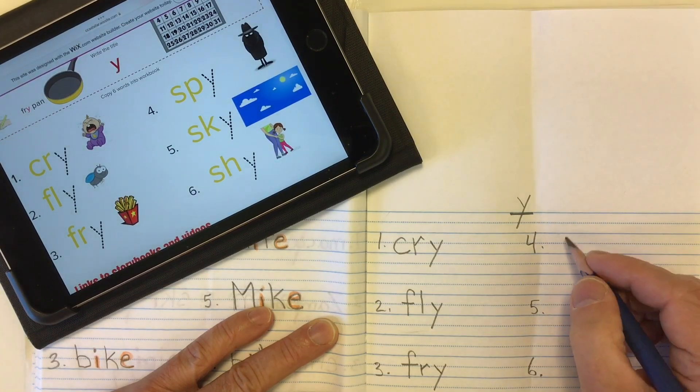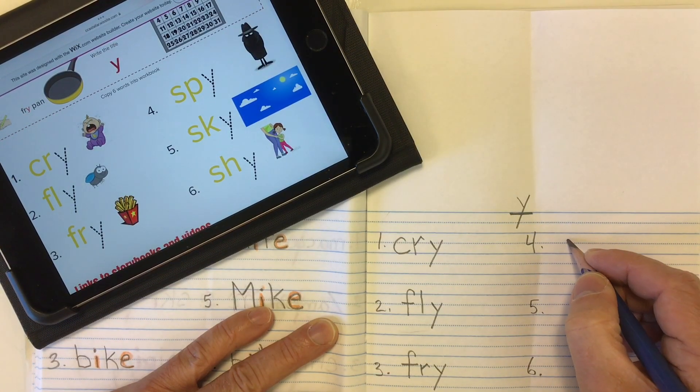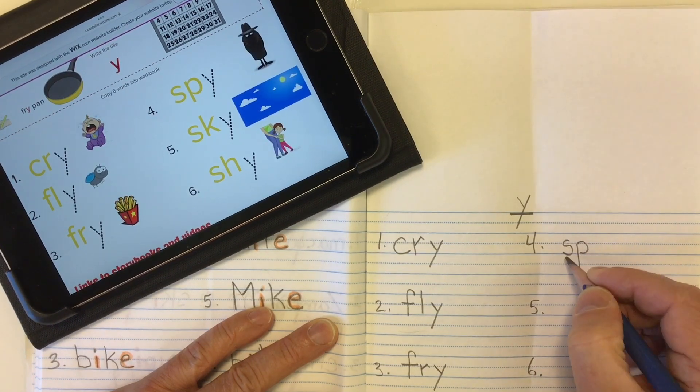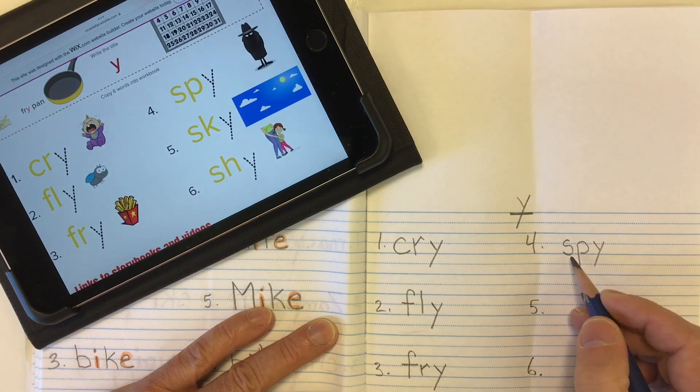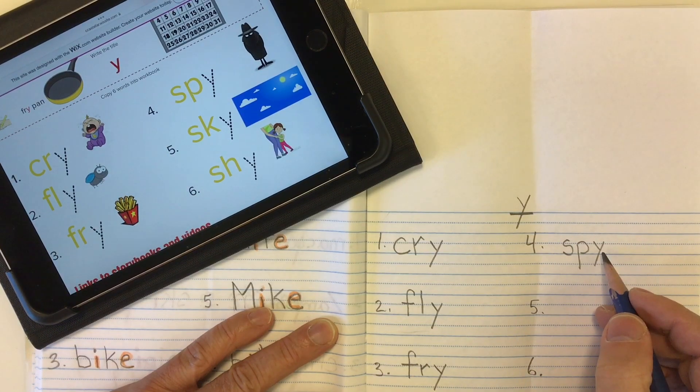Word number four is spy. The sp comes from a consonant blend, S-P, sp, sp. And then our I sound with a Y at the end, sp, I, spy, spy.